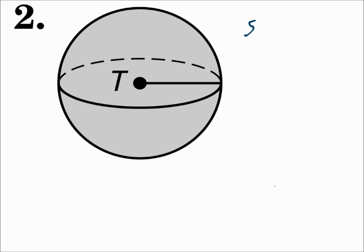Number two is a sphere. It has curves, so it is not a polyhedron. The sphere has center point T.